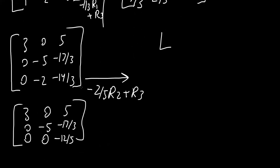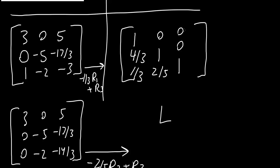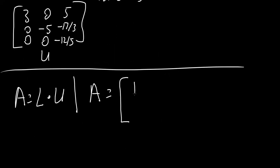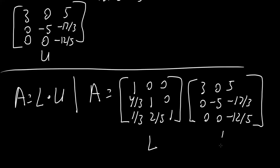This is L and this is U. So let me write down what we finally have. A equals L times U. L is: 1, 0, 0 / 4/3, 1, 0 / 1/3, 2/5, 1. And U is: 3, 0, 5 / 0, negative 5, negative 17/3 / 0, 0, negative 12/5. The L top right corner has 0s and the U bottom left corner has 0s. This is the final answer. It's very important that this is L and this is U — if you flip these two, you would not get the right answer.